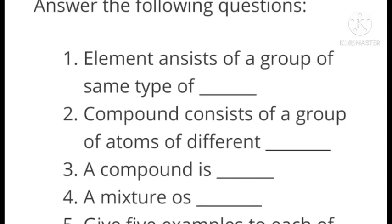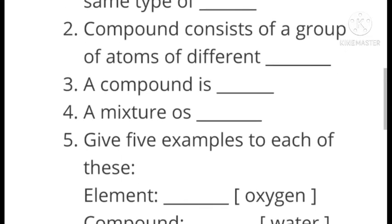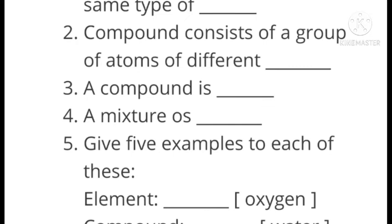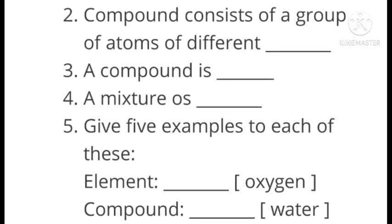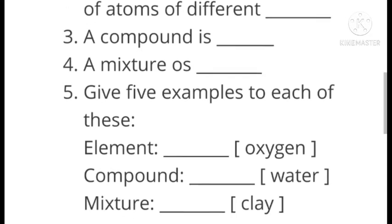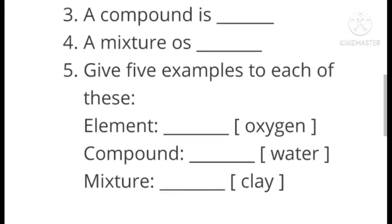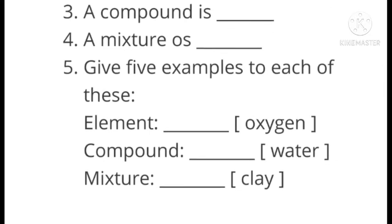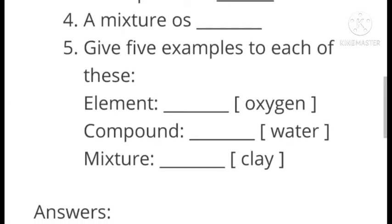Element consists of a group of the same type of atom. A compound consists of a group of different elements — a compound is two or more substances combined chemically. A mixture is a substance made by mixing other substances together. Question number five: Give five examples each of element, compound, and mixture.